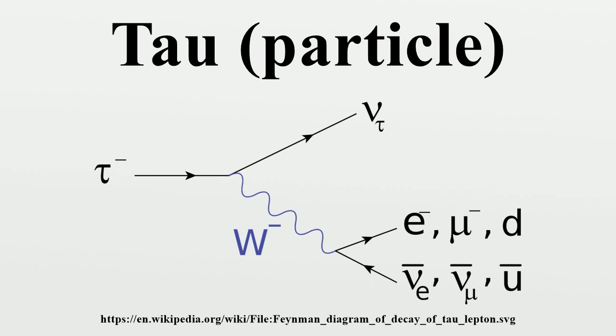Another is an onium atom tau+ tau- called true tauonium and is difficult to detect due to tau's extremely short lifetime at low energies needed to form this atom. Its detection is important for quantum electrodynamics.